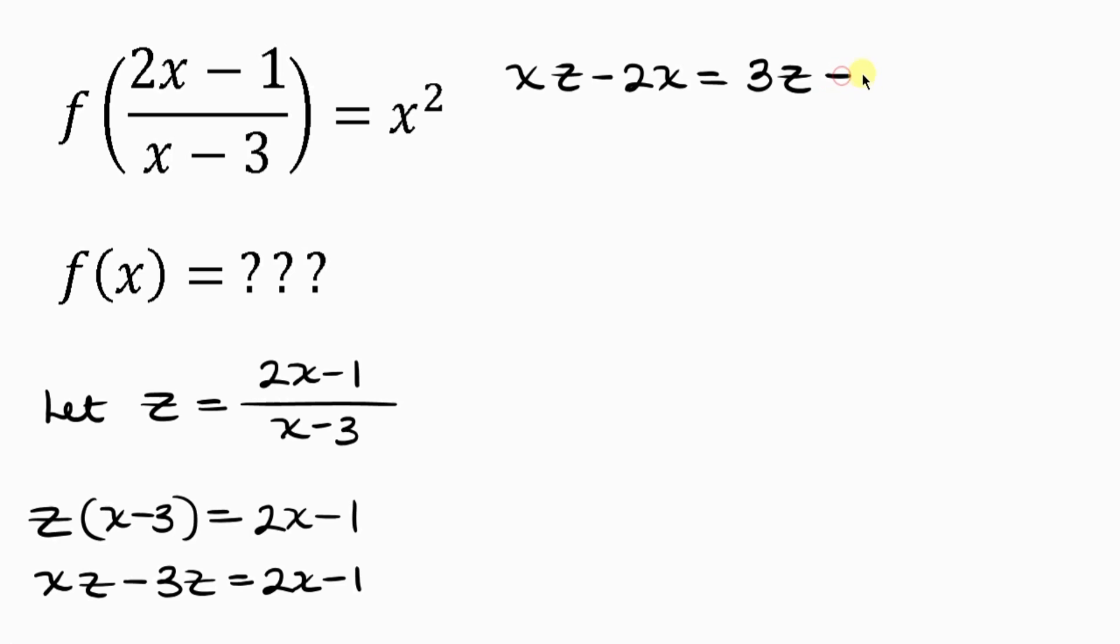Now notice that x is common, so let's factor out x. Now xz divided by x, I'm going to be having z minus 2x divided by x, I'm going to be having 2 equals 3z minus 1.